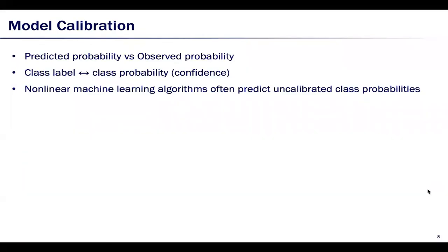Model calibration is another important aspect of model evaluation. Calibration examines the relationship between the predicted probabilities and the observed probabilities. With a well-calibrated model, for a certain class label, we have the confidence to further use the class probabilities and interpret them as the probability of certain events happening.